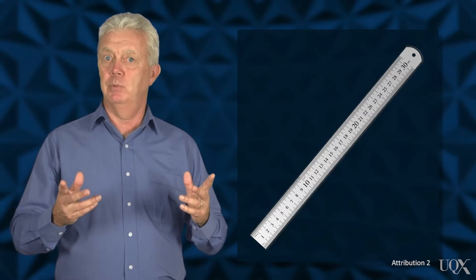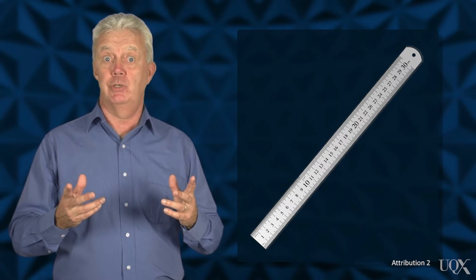An instrument is considered reliable if the same result is obtained from using it on repeated occasions. For example, a ruler is a reliable measure of length.